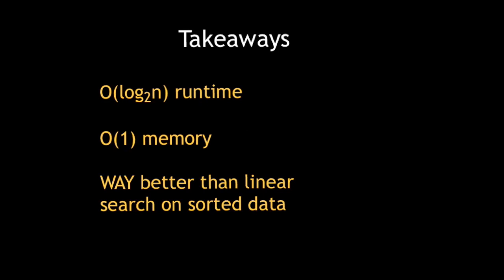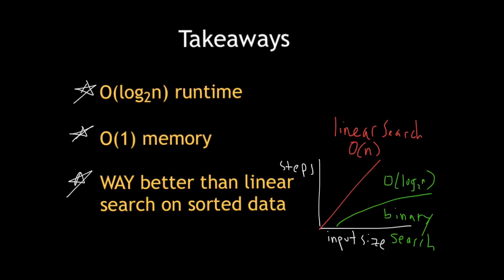So here are some of the takeaways from this video. Binary search takes O of log base 2n time to run because it successively cuts the list in half. It uses O of one memory because it only needs to store three values. And lastly, when compared to linear search, binary search is way faster when you're searching through a sorted list of data.